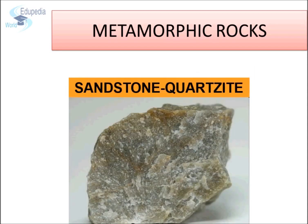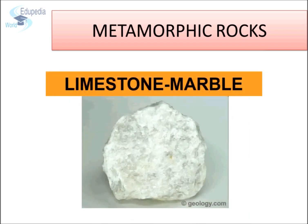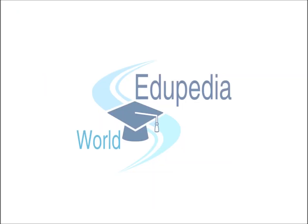Quartzite: this rock is formed when sandstone undergoes low-grade metamorphism. The pore spaces in sandstone are obliterated and the resultant quartzite is hard and massive. Marble: this beautiful rock is characterized by its granulitic or saccharoidal texture. This rock forms when limestone is subjected to low-grade metamorphism. This was all for this session.